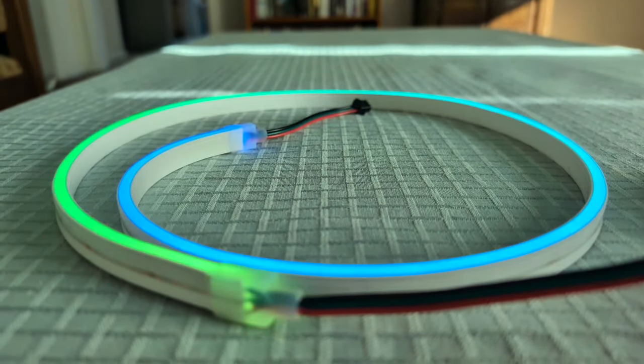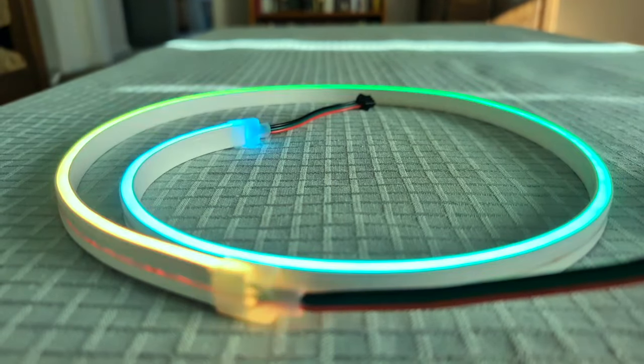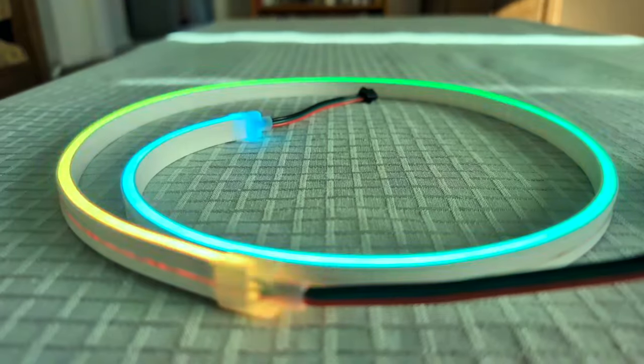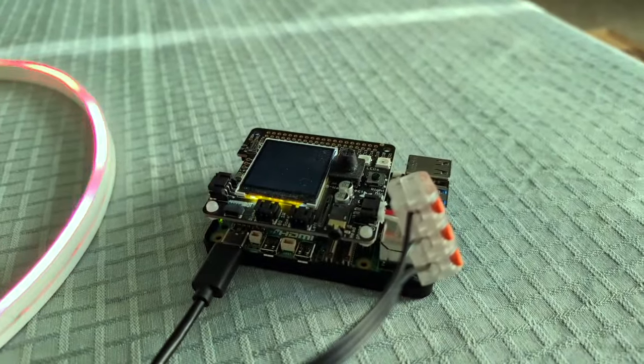I've got a rather ordinary looking NeoPixel strip here running an animation using the CircuitPython LED animation library. What's exciting about this is it's running on a Raspberry Pi 5 single board computer.